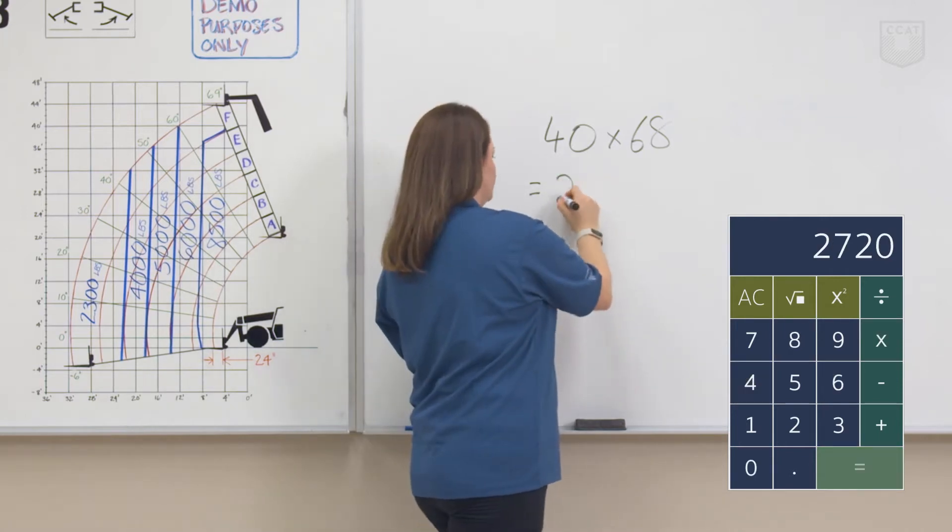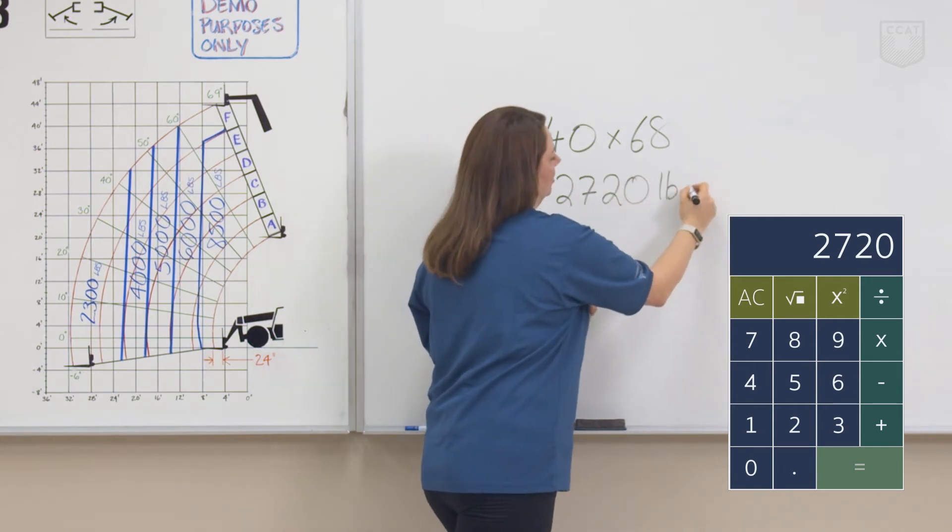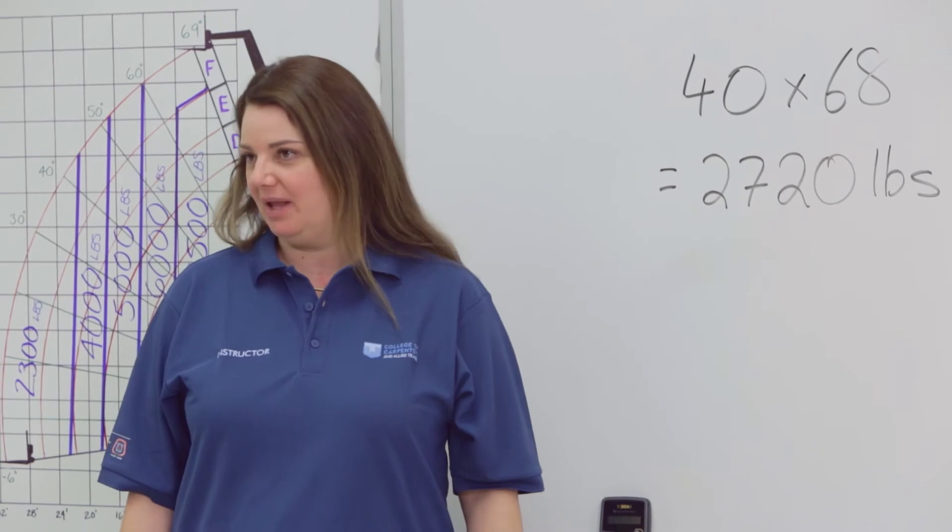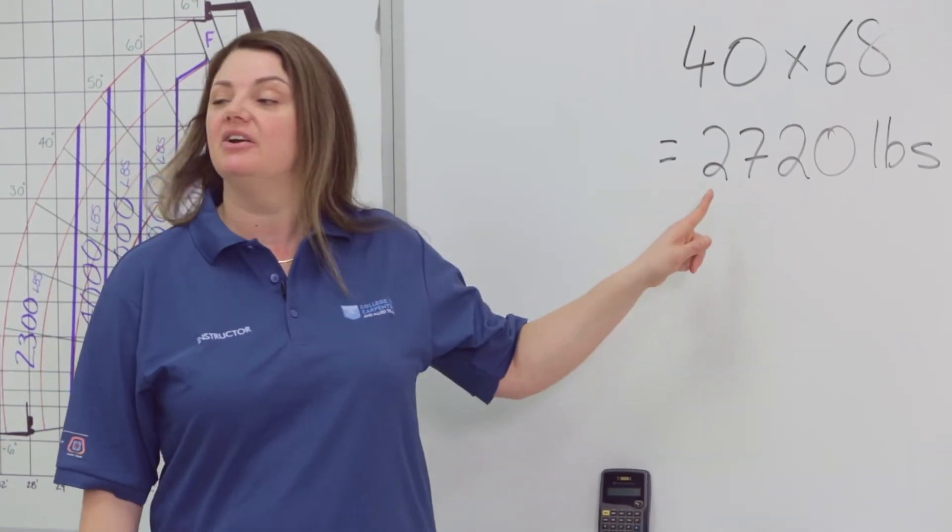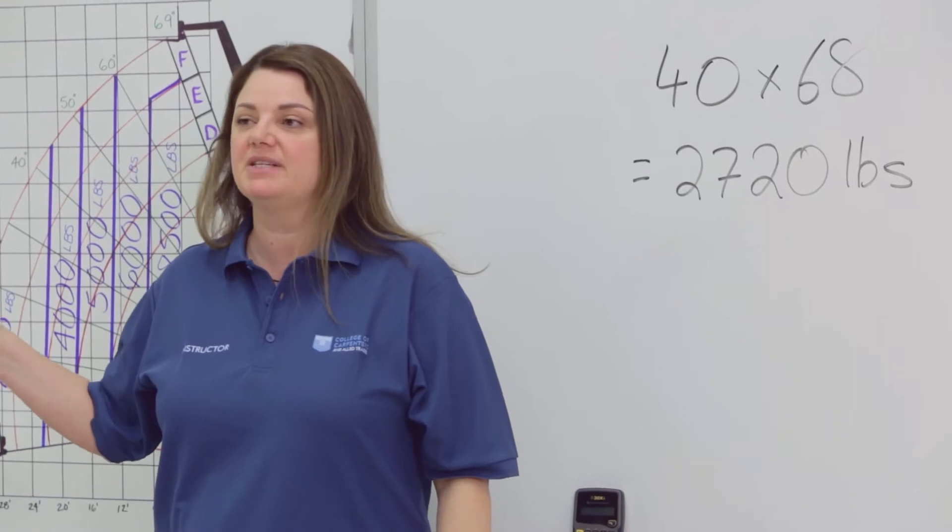and we're going to get a total of 2,720 pounds for our load. Now that we know the weight of the load, 2,720 pounds, we can move on to our load charts to see if this is going to be a safe load to lift.